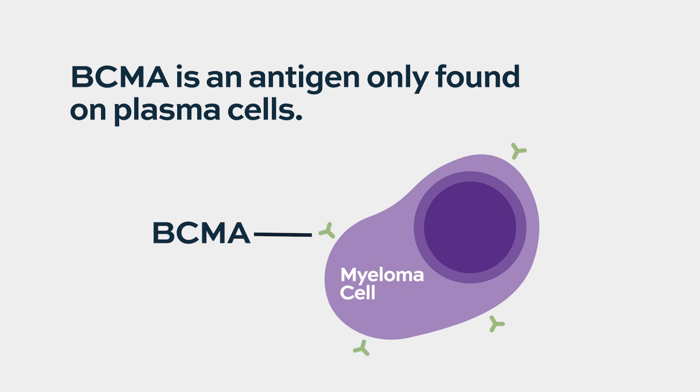BCMA is an antigen that's present on plasma cells, both normal plasma cells as well as multiple myeloma cells. It's hardly expressed anywhere else — predominantly only in plasma cells and myeloma cells. That makes it an excellent target to use, because you want targets that are only present on the myeloma cells and not anywhere else. That way, if we develop an antibody to that antigen, it's going to be very specific to the myeloma cells.